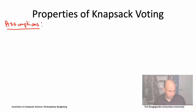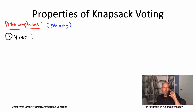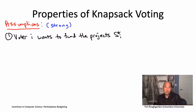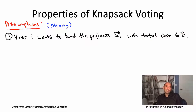Assumption number one: we think of each voter I as being focused on getting a certain subset of the projects funded, which we call S* of I. For example, voter 17 really wants projects three, five, and six funded. We also constrain voters so that the projects they want to fund are feasible — the overall costs of those projects should be at most the budget. You can think of this as asking voter I: if you were a dictator and got to unilaterally decide which projects to fund, what would you pick? S* I is the answer that voter gives.